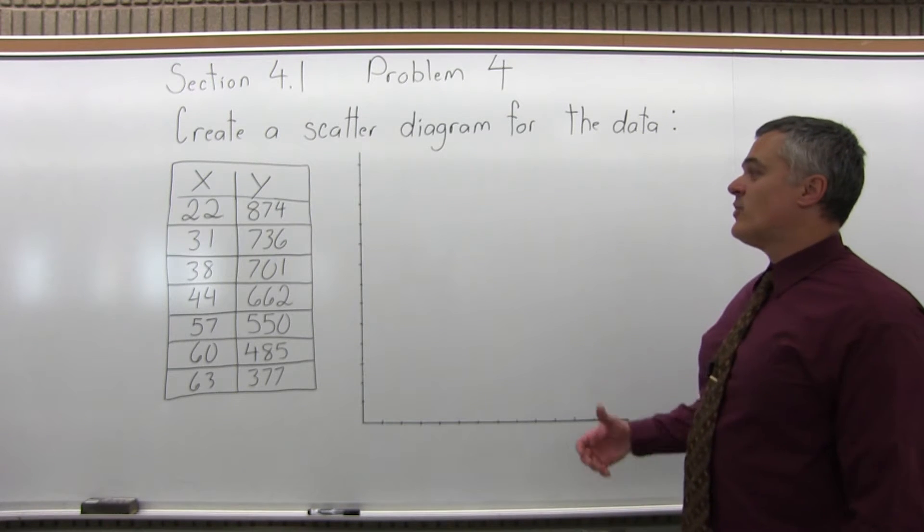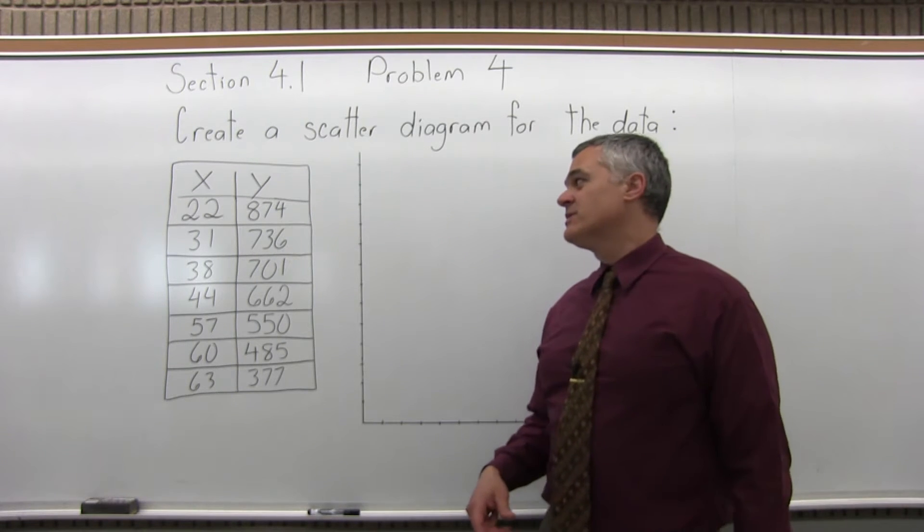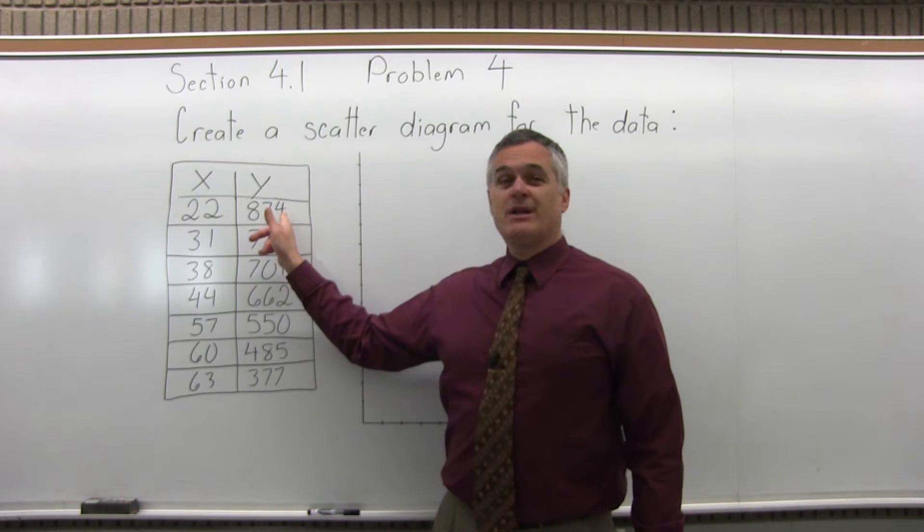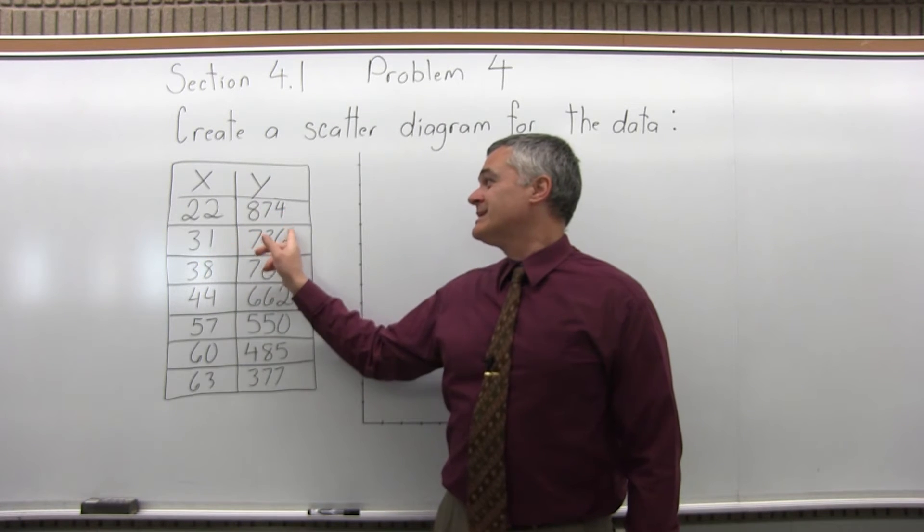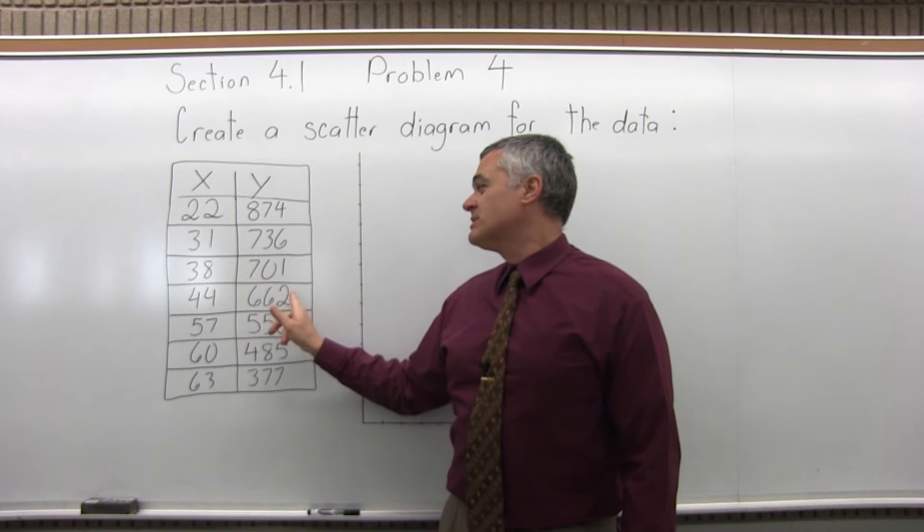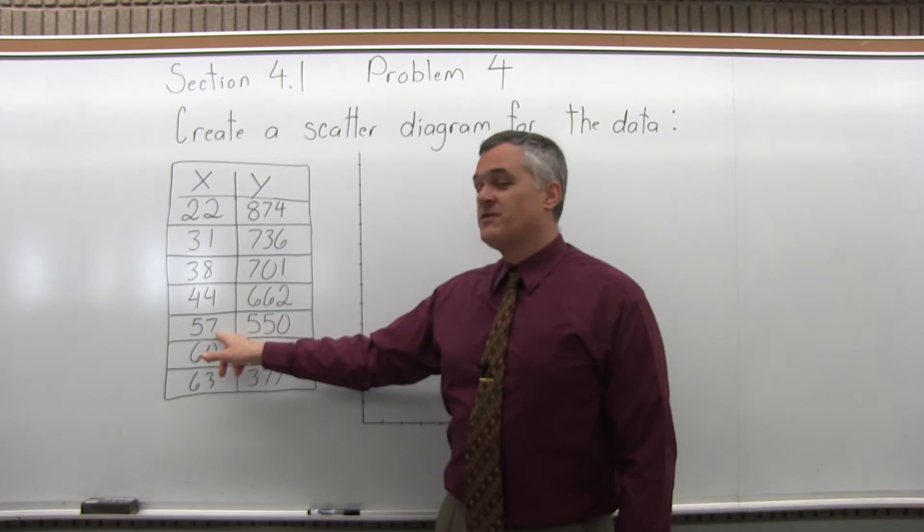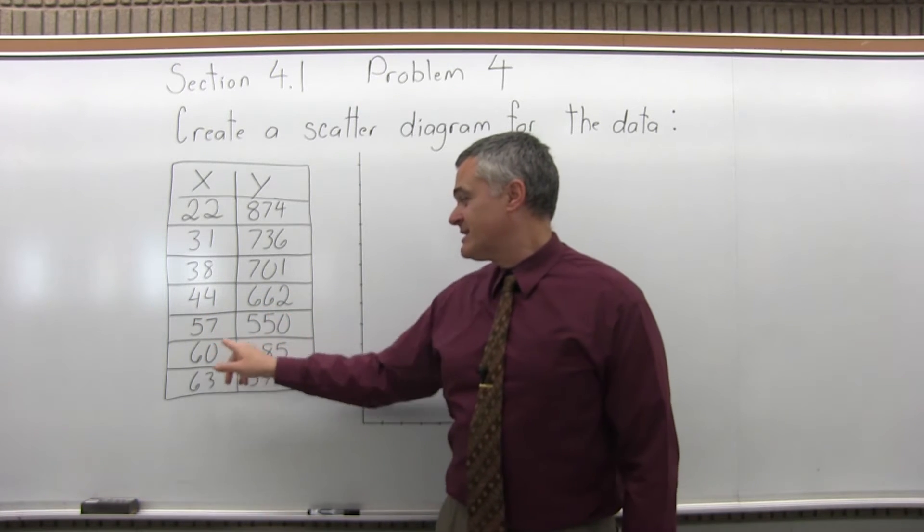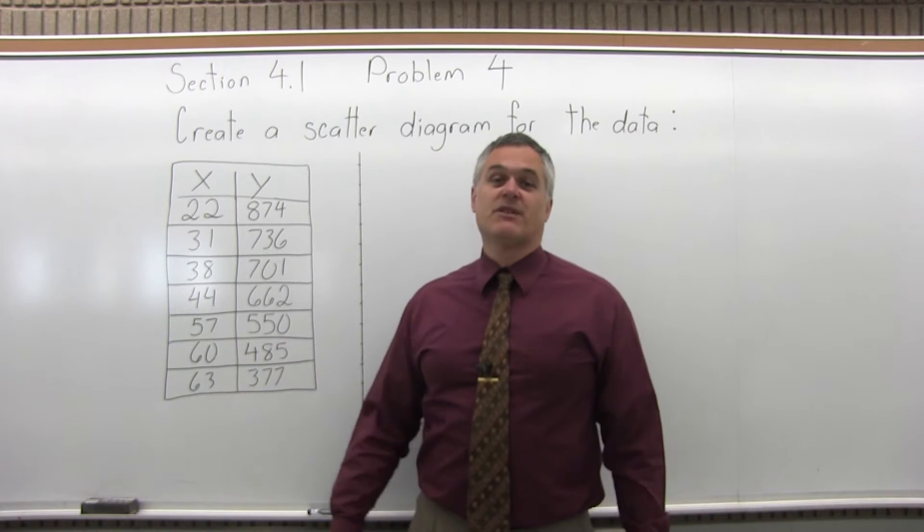It says, create a scatter diagram for the data, and we have seven data points for this one. 22, 874, 31, 736, 38, 701, 44, 662, 57, 550, 60, 485, 63, 377.